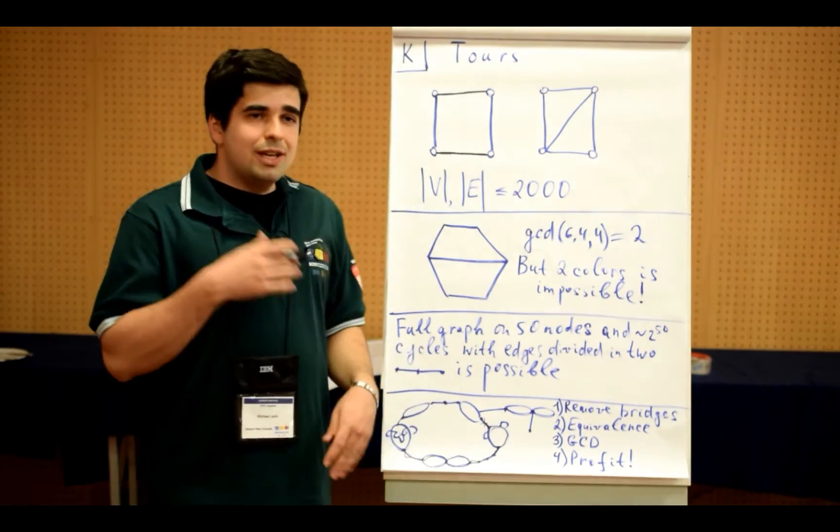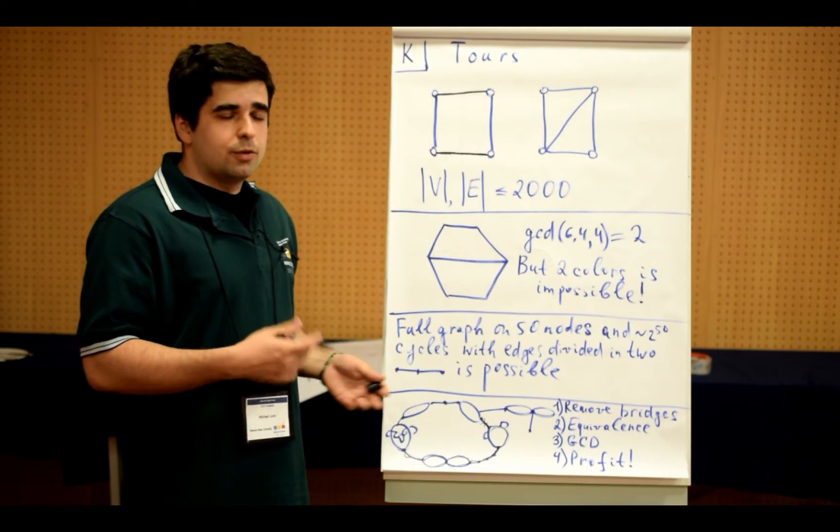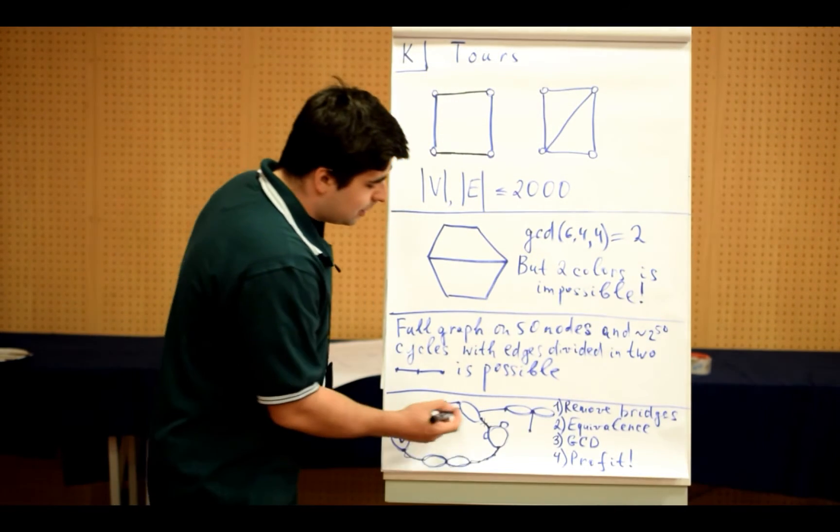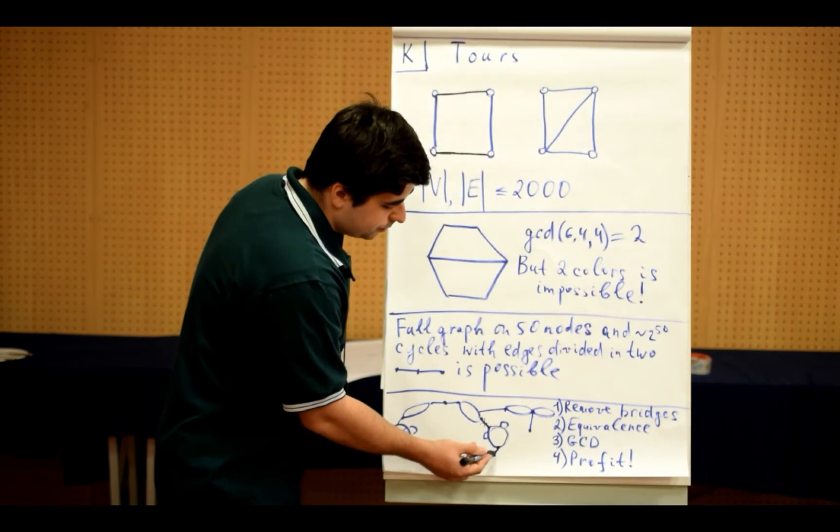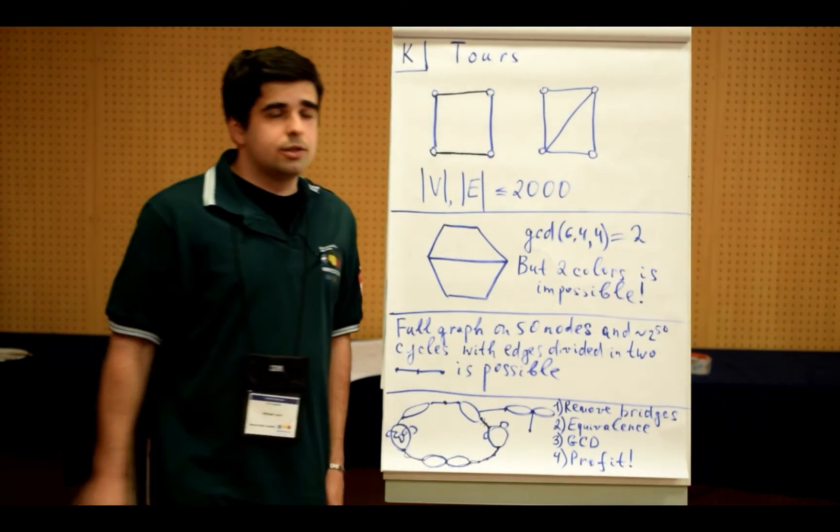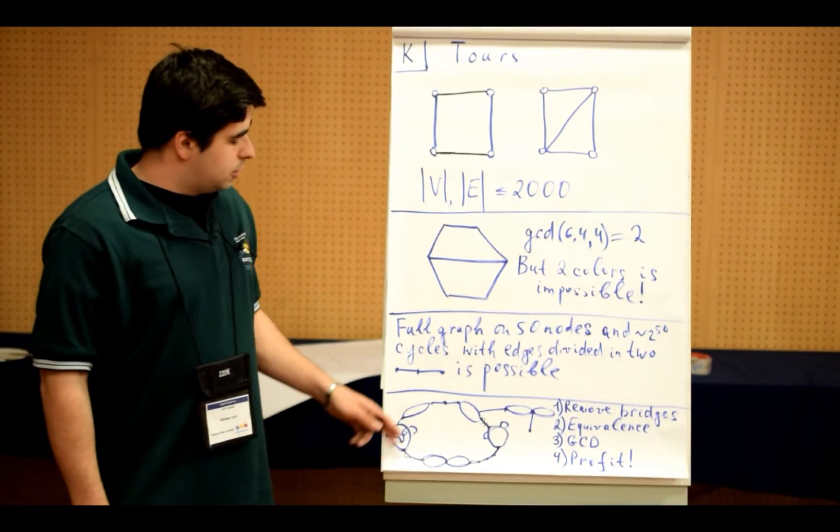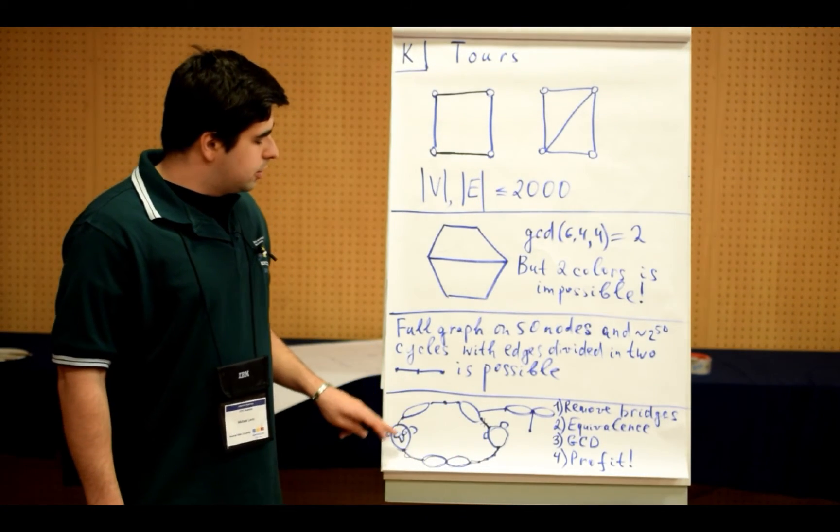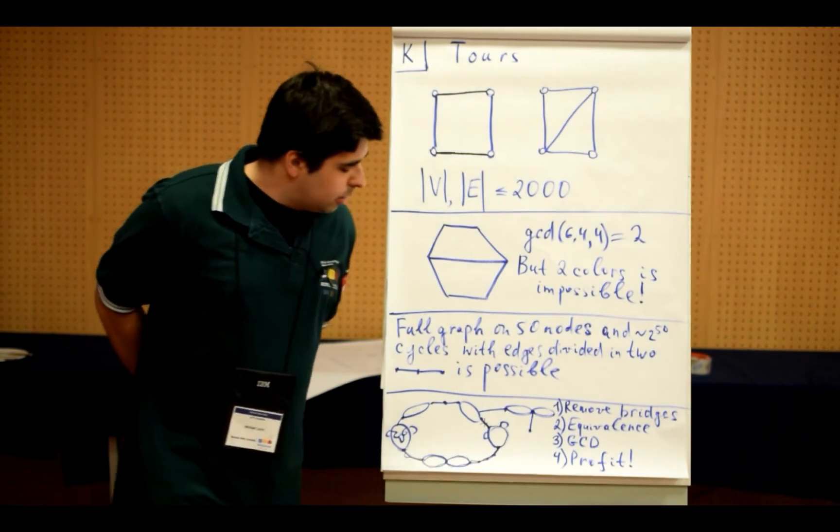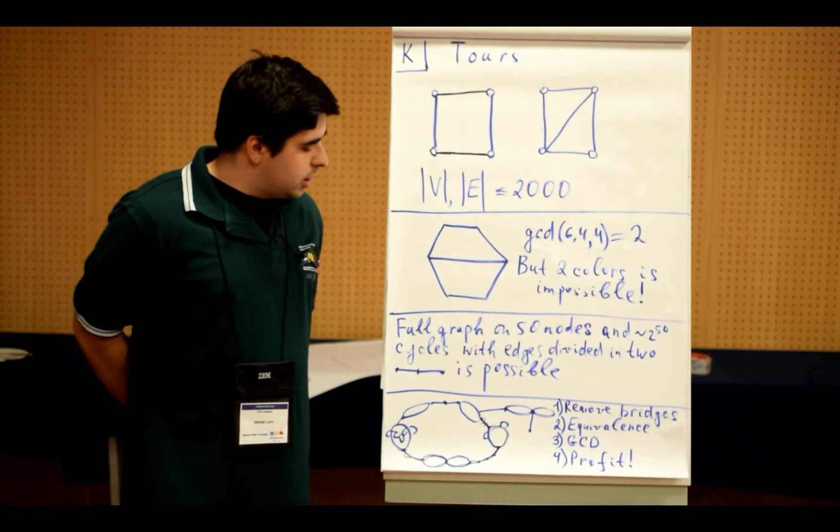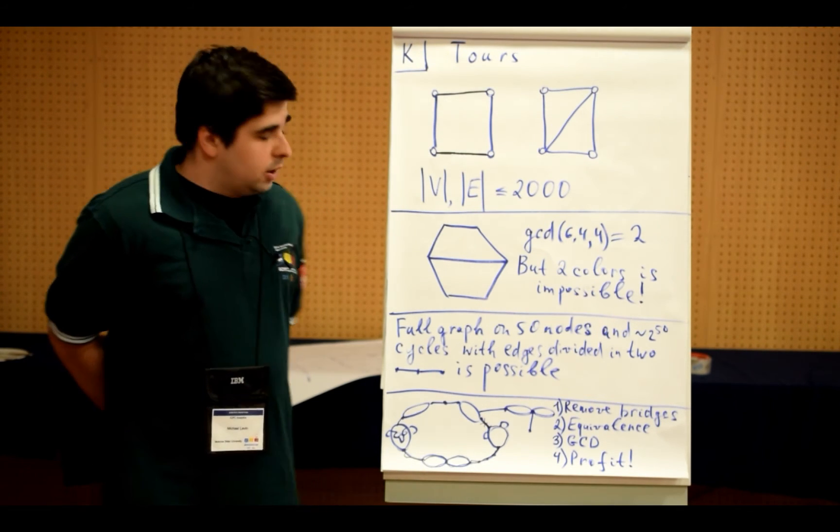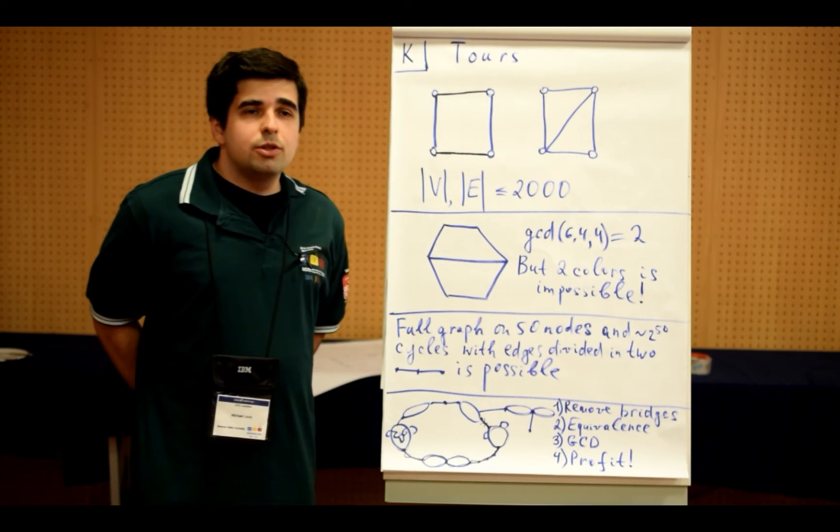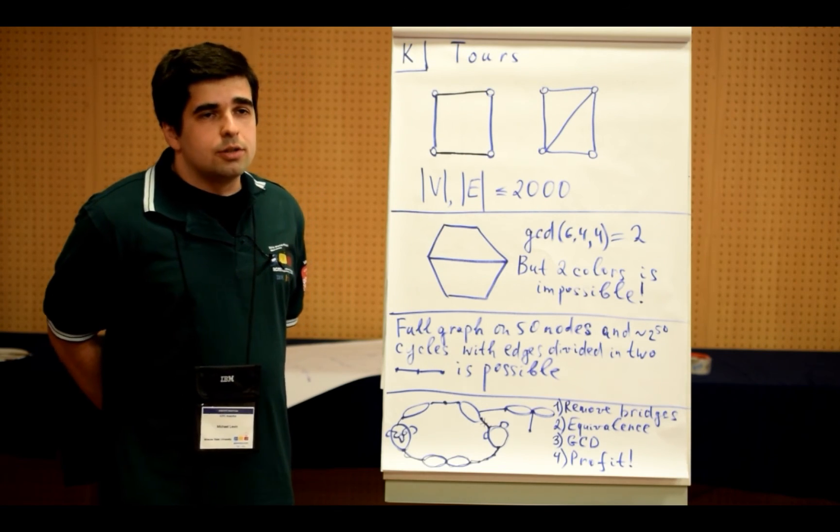But if we, so to say, subtract one cycle from another one, what is left is these edges in the class of equivalence. So we can see that it is necessary that on any such class there will be equal number of edges for each color. This is necessary, and it can be shown to be sufficient actually.